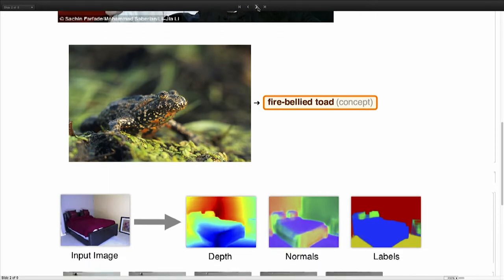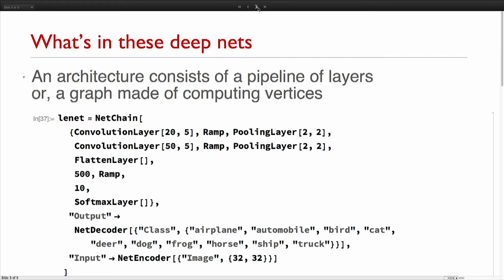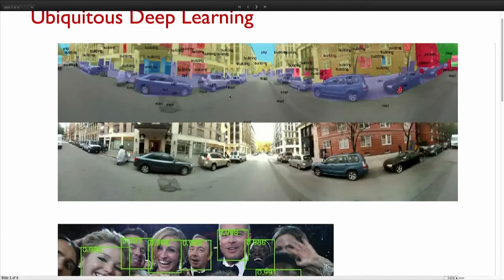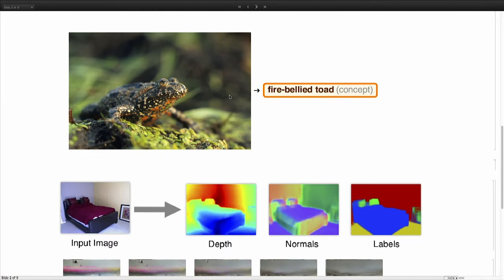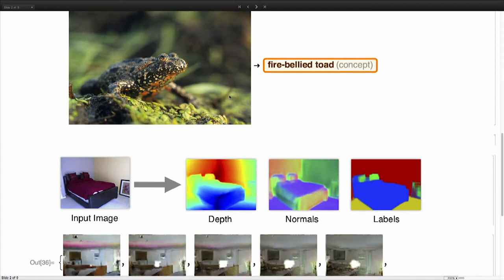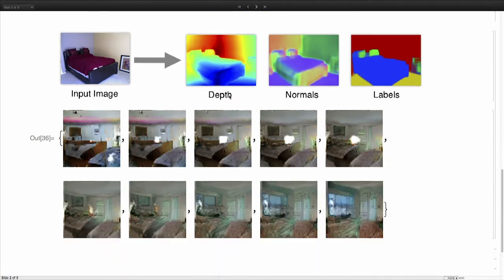In computer vision there are also some really puzzling results. For example, this is an application about depth estimation from a single image. You take just one picture and the algorithm is able to recover the depth, the normals in the scene, and also do segmentation all at once from one image only. The fact that based on training data the algorithm is able to find its representation and achieve this type of very hard task is pretty impressive.